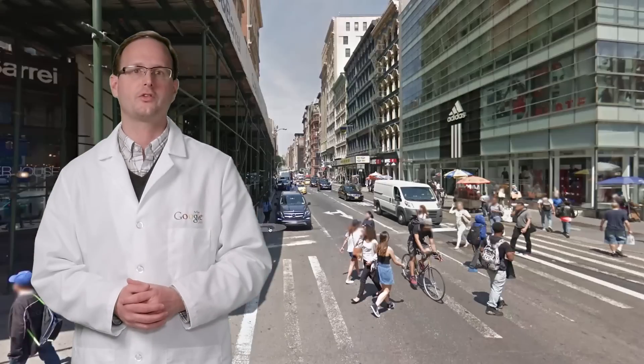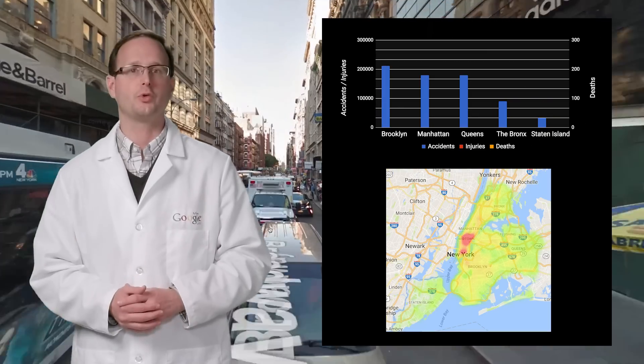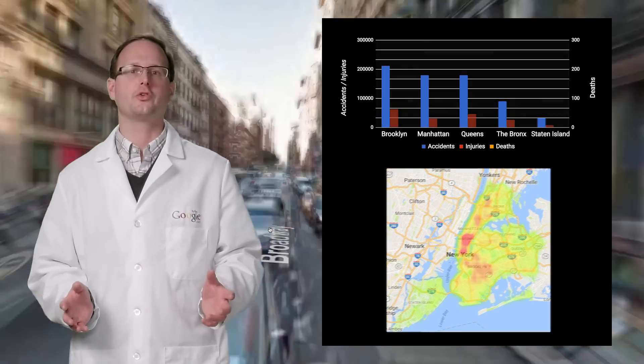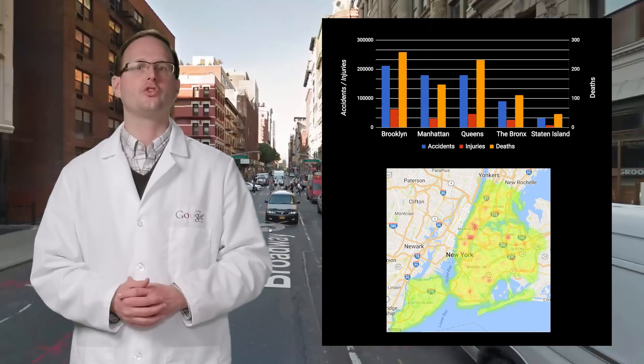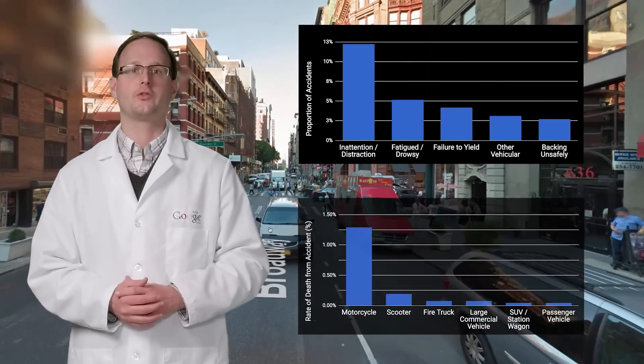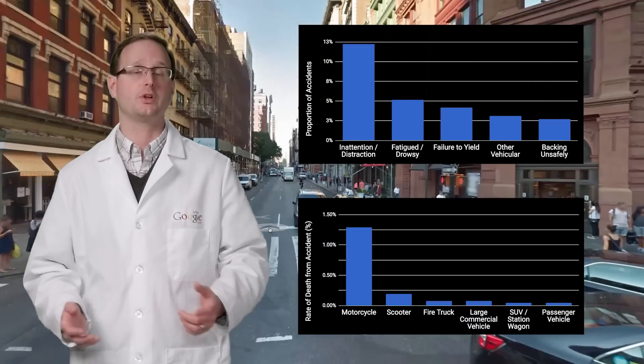For example, in 2016, these city streets witnessed a lot of traffic accidents. There were over 200,000 motor vehicle collisions across the five boroughs, resulting in over 50,000 injuries and 200 deaths, mainly due to driver inattention and motorcyclists being the most likely to die in the case of a collision.